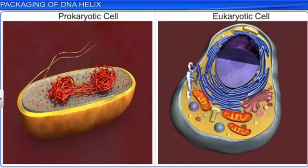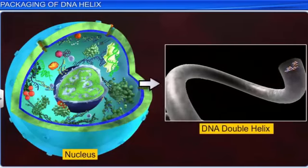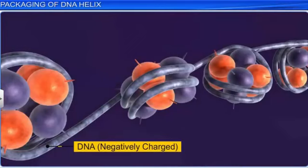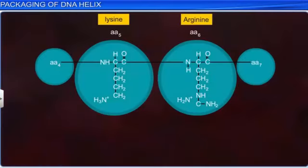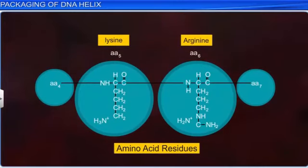On the other hand, in eukaryotes, the manner in which a DNA double helix is packaged within the cell is more complex. Eukaryotes contain a single molecule of negatively charged DNA packaged around a spool of positively charged basic proteins known as histones. The charge in a protein is decided by the abundance of amino acid residues with charged side chains. The histones are positively charged as they are rich in basic amino acid residues like lysine and arginine, which carry positive charges in their side chains.